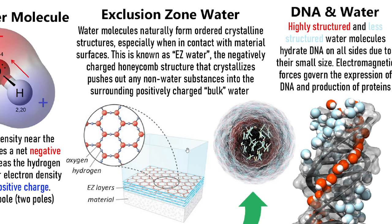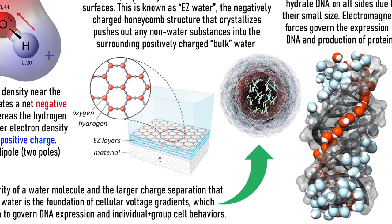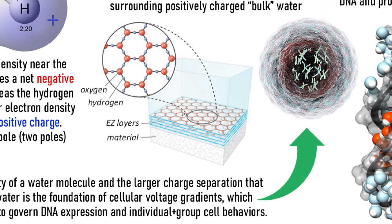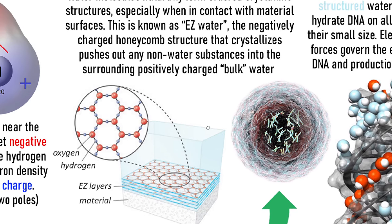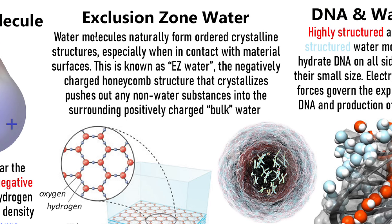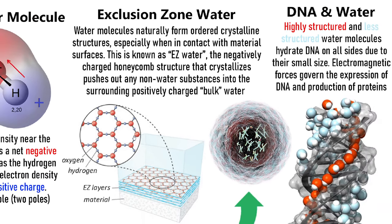The bulk water will be slightly positively charged. This material causes water to crystallize, and this EZ zone gets bigger when there's radiant light coming in — it expands by like two to three times. This forms a net negative charge, and then the rest of the water, because this has slightly more negative charge, takes on a positive charge. It will also contain all those other substances that may be dissolved into the water that get kicked out of the exclusion zone.